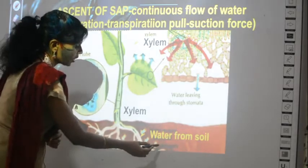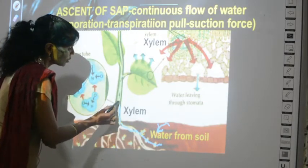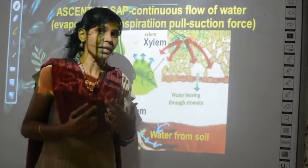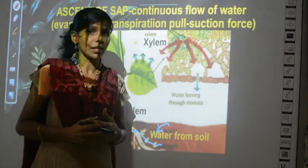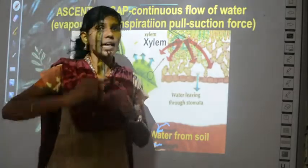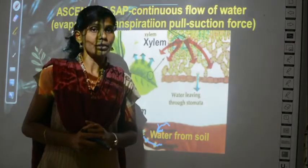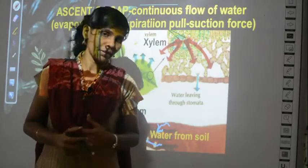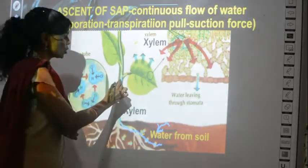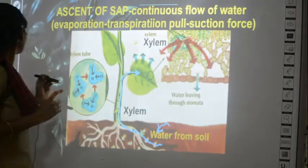Water from the ground enters the root and passes through the xylem. We pour water in the soil, it enters the root, and moves through the xylem. Xylem is present in all parts of the plant — root, stem, and leaves. Only xylem transports water; phloem transports food. Through the xylem in the stem, water moves and reaches the leaves.